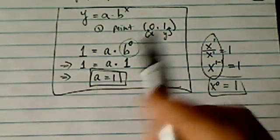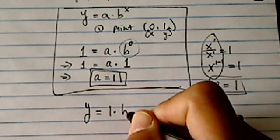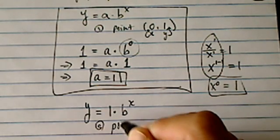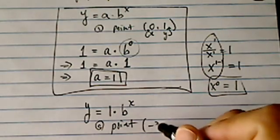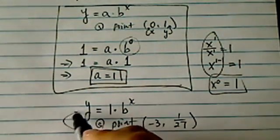Let's use the second clue. Since A equal to one, I have one times B to the X. The second clue says, at point minus three, one over twenty-seven, fits in this equation. Well, let's take a look.